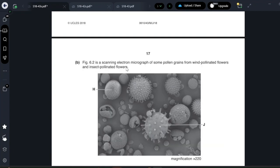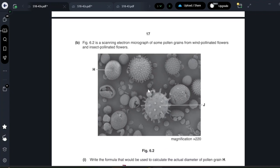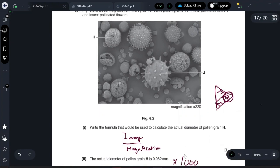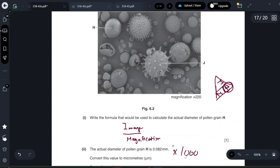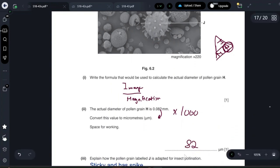Figure 6.2 is a scanning electron micrograph some pollen grains and wind pollinated flowers. Write the formula that would be used to calculate the actual diameter. I will write magnification equals image over actual. If I want to get the actual then it is image over magnification. The actual diameter is 0.082. If you want to convert it to micrometers you will multiply by 1000 so it will be 82.